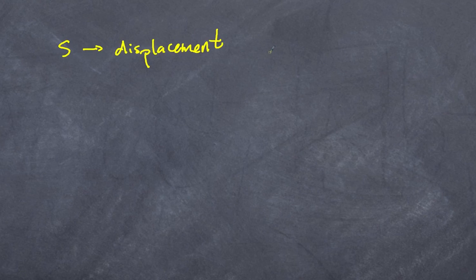For this video, I first want to touch base on the variables we will use. The first one is S, which is going to be my displacement. Some books and sources will use R, and some others will use X. We use S — it comes from the Latin 'Spatium,' which means distance. So for our purposes, I'll use S as displacement.